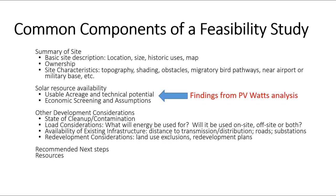It's also important to document the current state of everything and then talk about next steps and what resources are available. If there is an interested party in developing the property, who should they talk to? How should they kick off the interaction with the site ownership or with the parties that hold stake in the property? Finally, it's important to list out resources available for developing the site — whether it's the local Department of Environmental Quality or information on the EPA mapper that is relevant to the site. Those types of resources should also be included in a feasibility study.